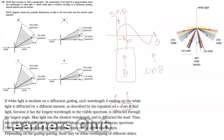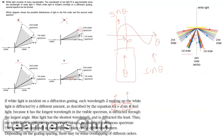Now we need to know whether the orders have equal intervals of theta or if it varies. In first order you have one theta; in second order this theta will be different — it will not equal twice the first order theta. There will not be a linear increase in theta because it's a periodic function, so it will vary. This means the interval is not the same. Therefore, the answer is C.